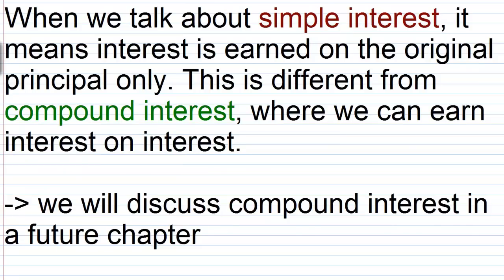One thing you need to understand is that when we talk about simple interest, it means interest is earned on the original principal only. This is different from compound interest where we can earn interest on interest. If you go to a bank your money is going to compound. If you put a thousand dollars in there and you earn let's say a hundred dollars in interest over the period of one year,